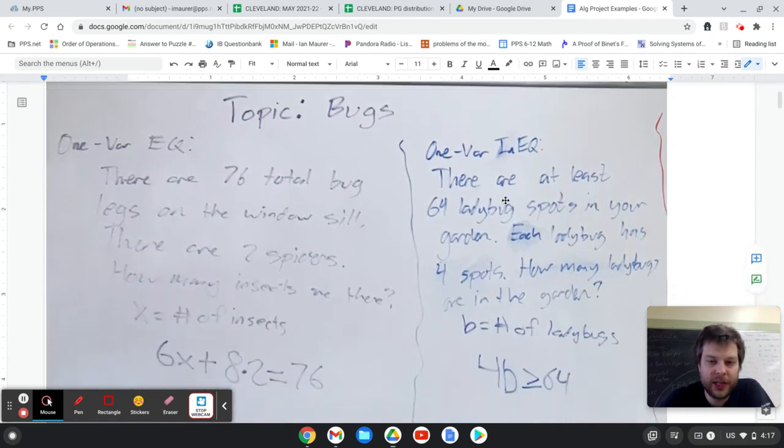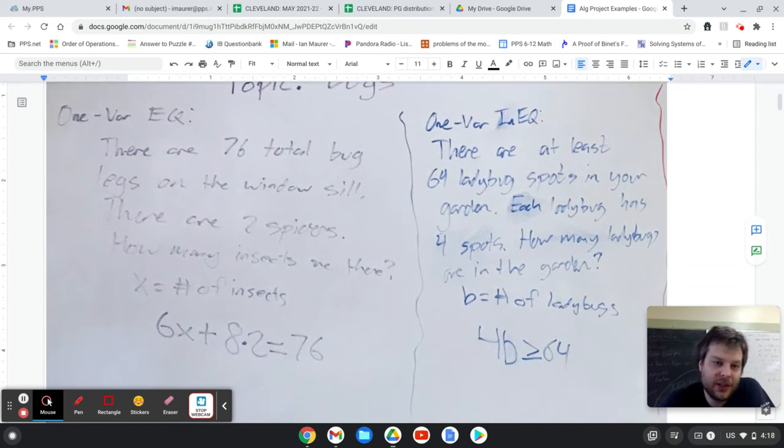So the first topic was bugs. We wrote word problems about different types of bugs. My one variable equation was just about how many bug legs were on the windowsill. And I wrote that there were two spiders and 76 total bug legs and asked how many insects there are.